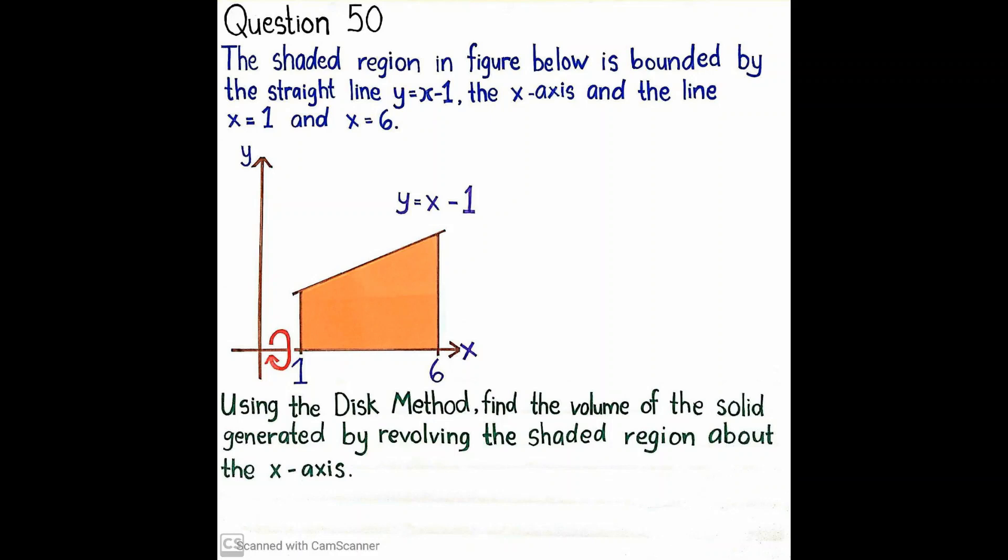Okay, how about question number 50, volume? That question is quite hard for me. Oh, that question, it's not really hard. Let me help you. This is question 50 regarding the subtopic of volume. The shaded region in the figure below is bounded by straight line y equals x minus 1, the x-axis, and the line x equals 1 and x equals 6. Using the disk method, find the volume of the solid generated by revolving the shaded region about the x-axis.